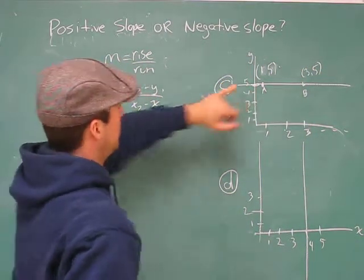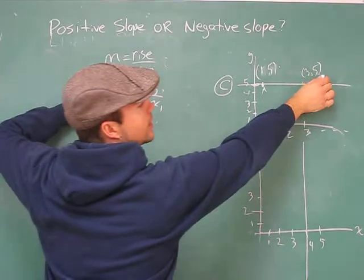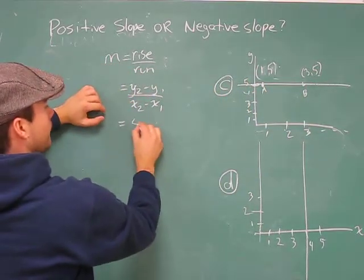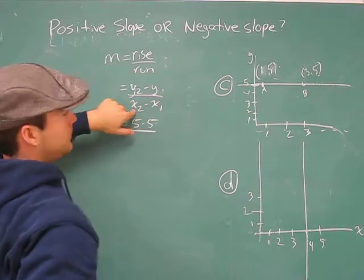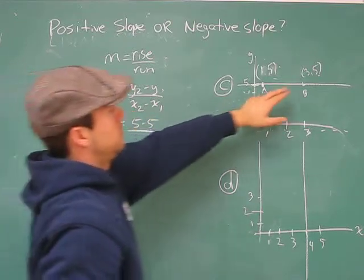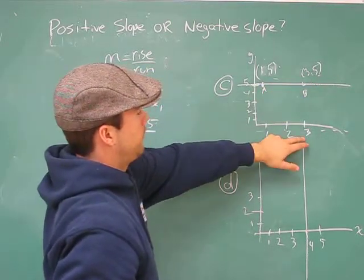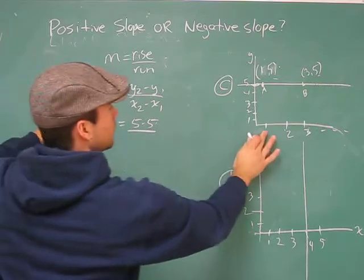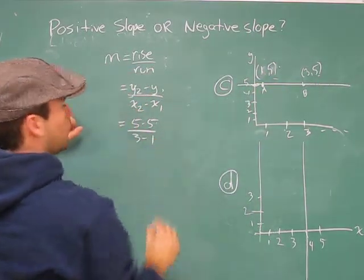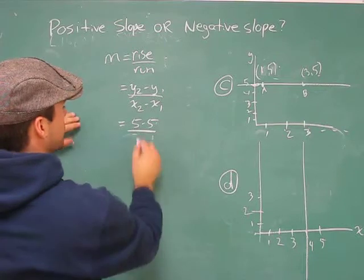Y2 minus y1. Both our y's are 5, so we're going to get 5 minus 5. Now x2 minus x1, 3 minus 1. 3 minus 1, or it doesn't really matter, it could be 1 minus 3.